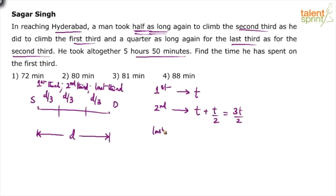How much time would he take for the last third? He will take one fourth more than the time taken in the second third. So you will take 3t by 2 plus one fourth of 3t by 2. Simplify this now.